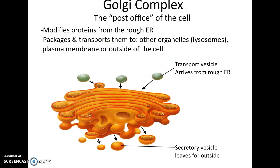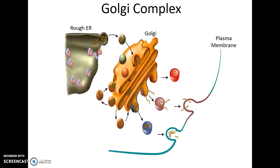The Golgi complex is a series of pancake-shaped membrane layers that accept vesicles from the rough endoplasmic reticulum, then package and modify the proteins found in those vesicles, and send them out either to other organelles, to the plasma membrane, or to be secreted outside of the cell.